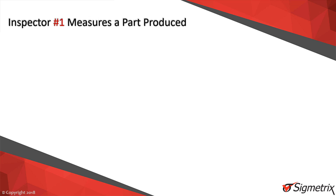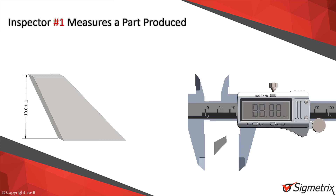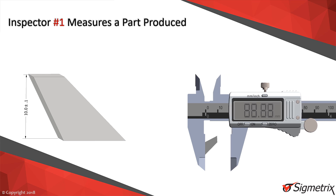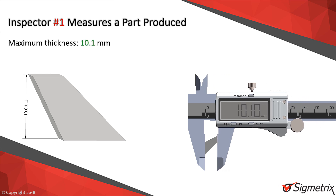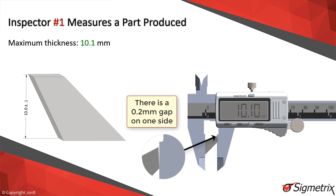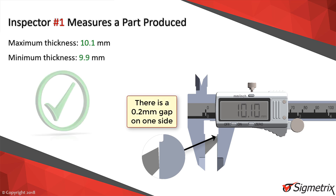After the parts are made, an inspector measures the overall height at 10.1 millimeters, though there's a small gap of 0.2 millimeters on one edge. Since the minimum and maximum thickness falls within the 10 plus-minus 0.1 millimeter tolerance zone, this seems to be a good part.